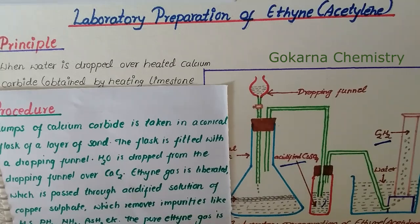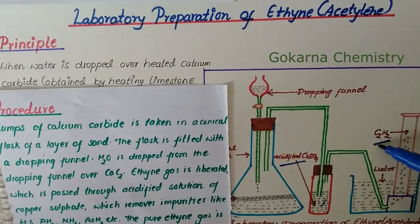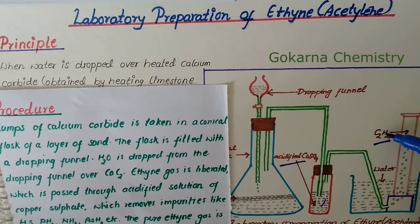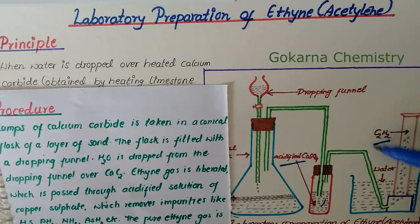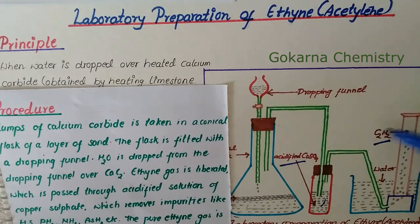The pure ethyne gas is collected by downward displacement of water. Ethyne gas is lighter than air, so it is collected downward, and it is insoluble in water. Ethyne is soluble in organic solvents like alcohol, ether, etc.